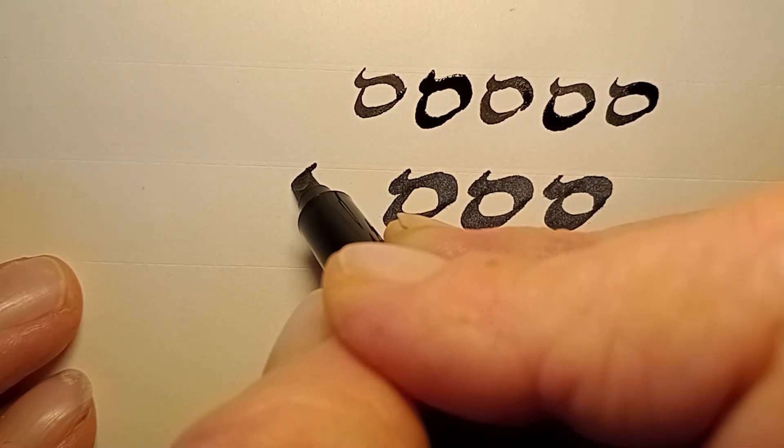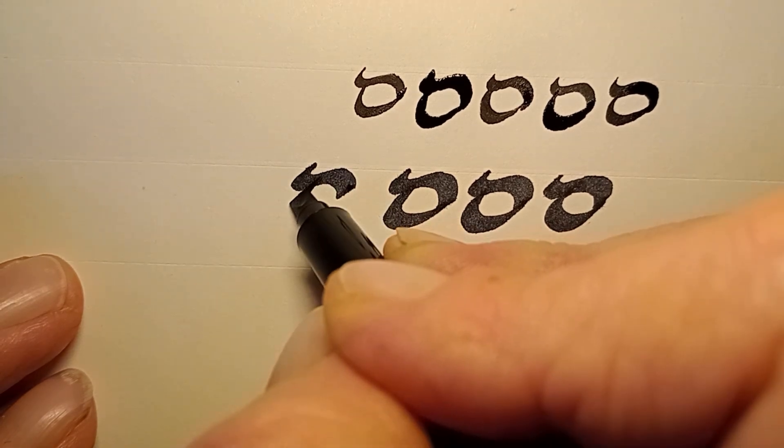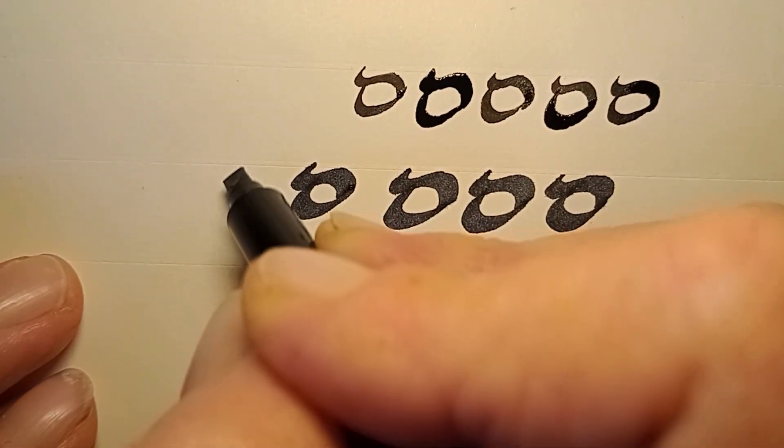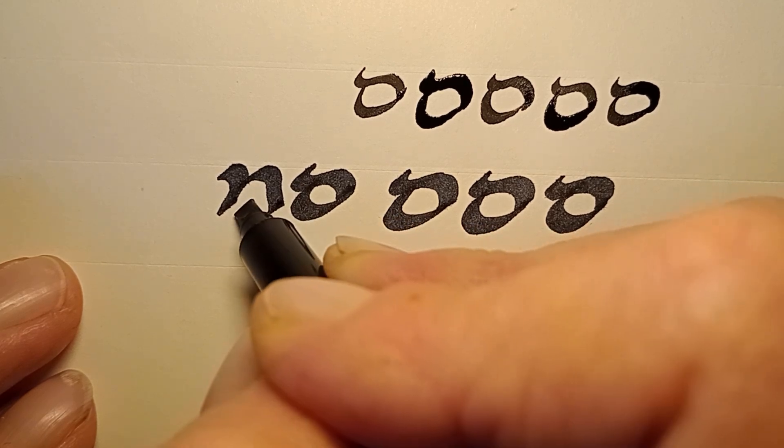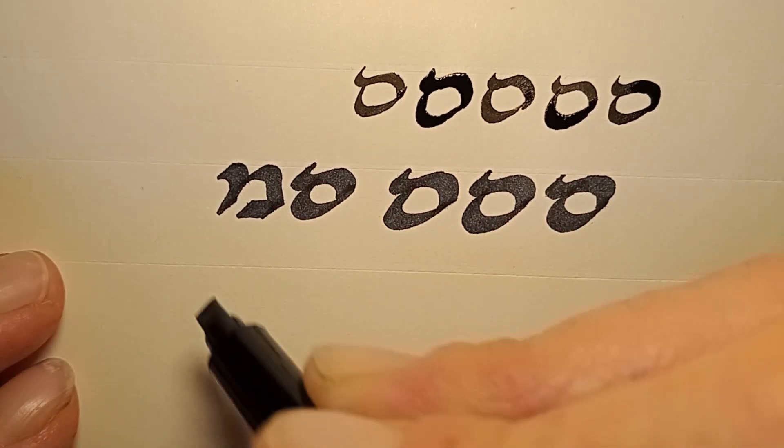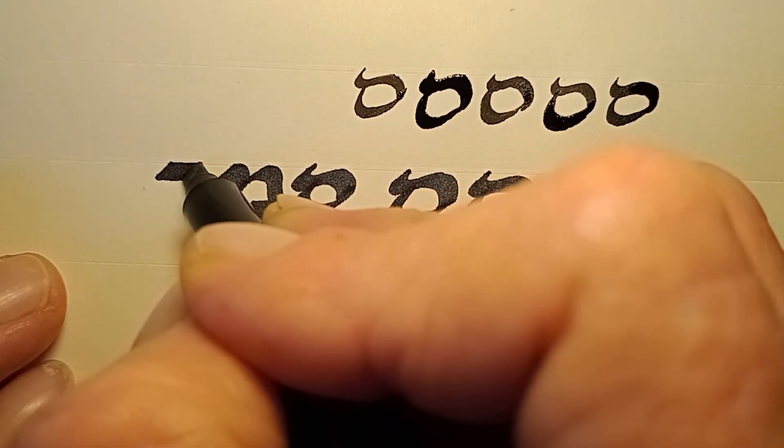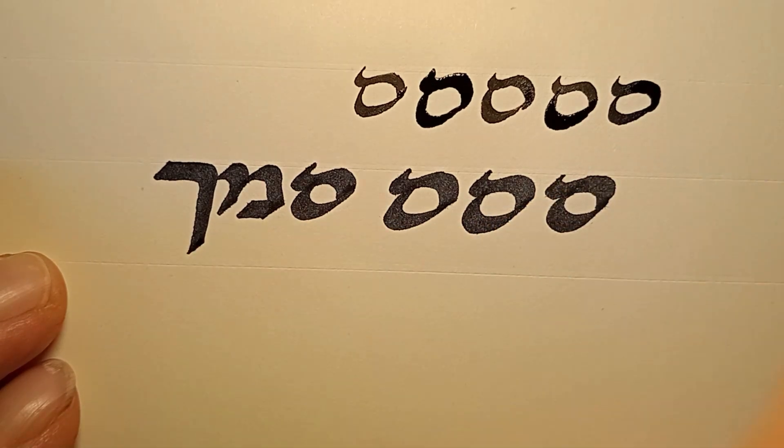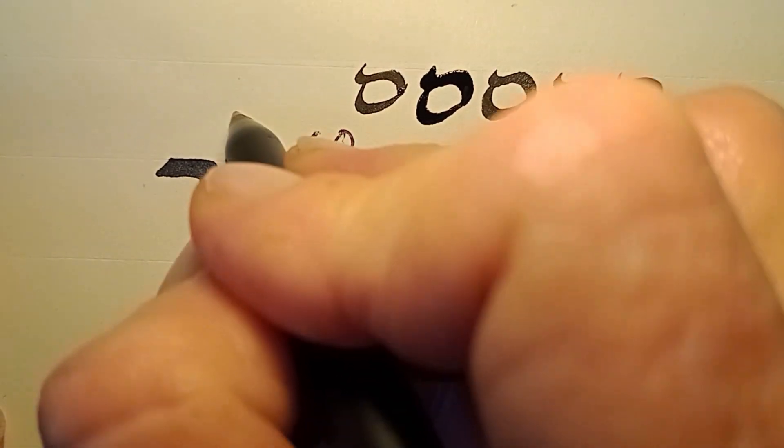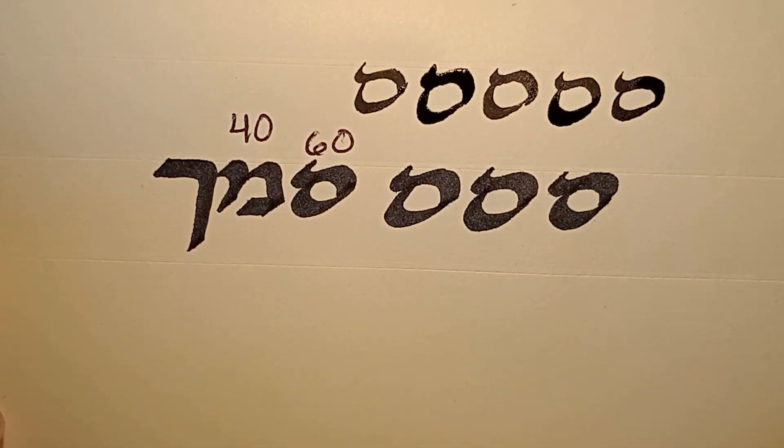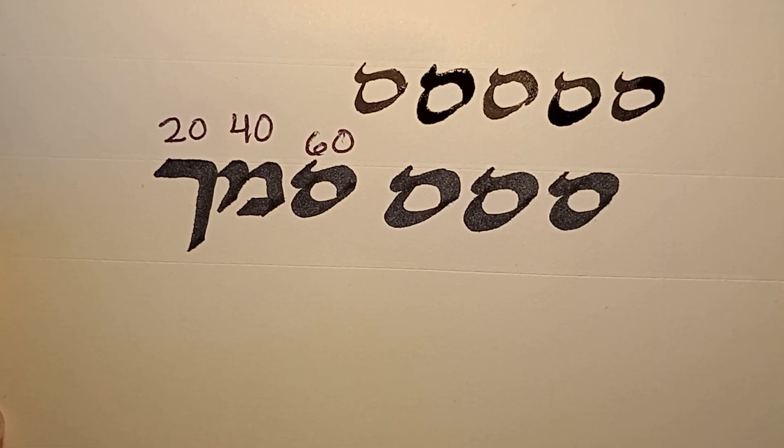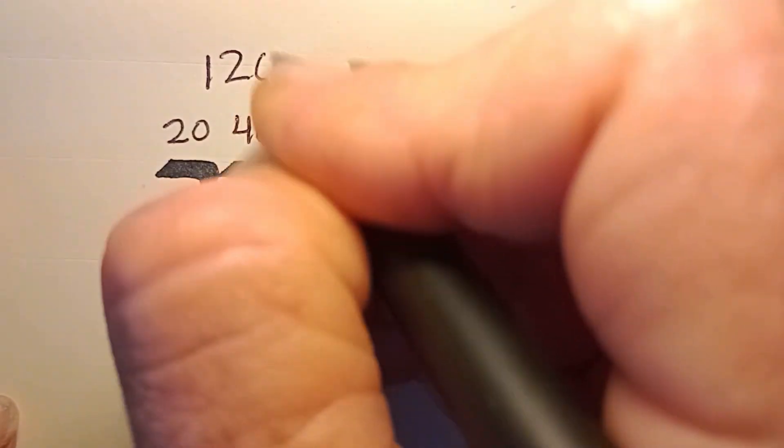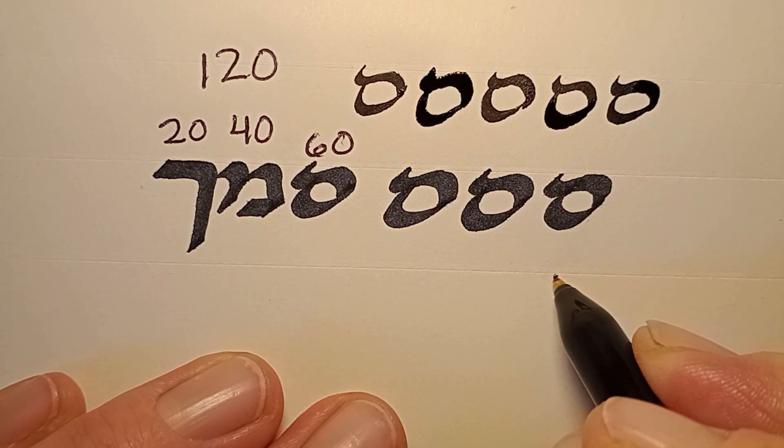And then we'll spell it out. Samik, mem, and kaf sofit. Samik has a value of 60, mem with a value of 40, kaf sofit with a value of 20, for a total of 120 for the word samik.